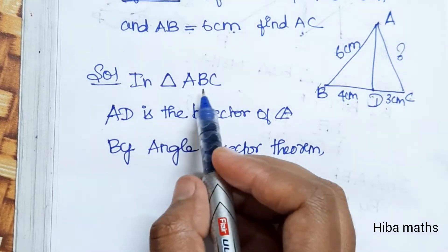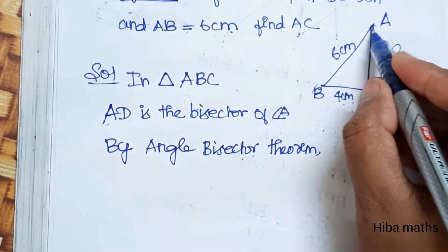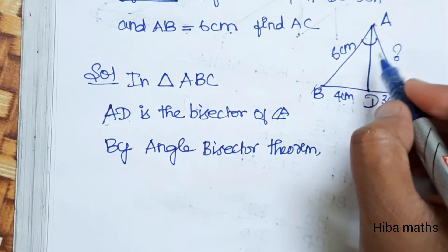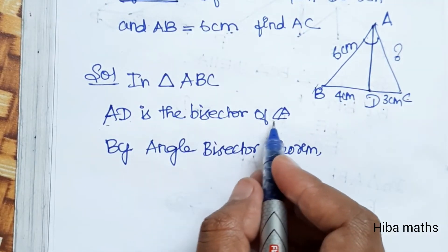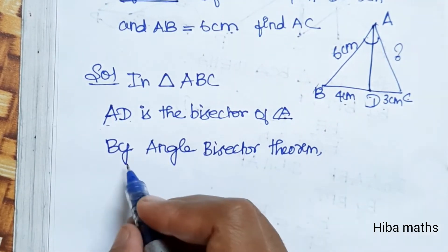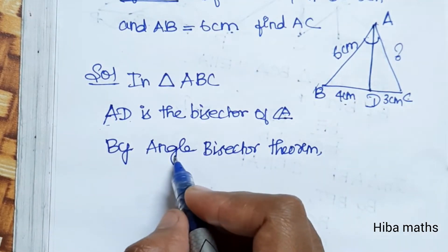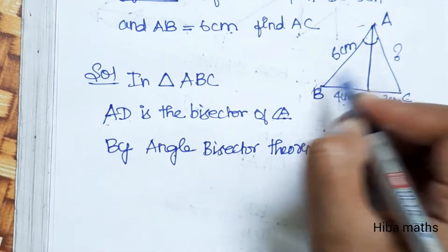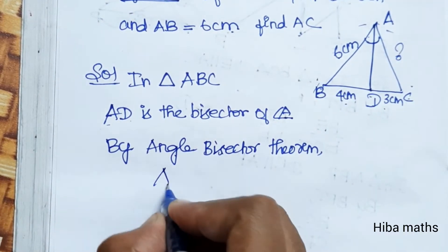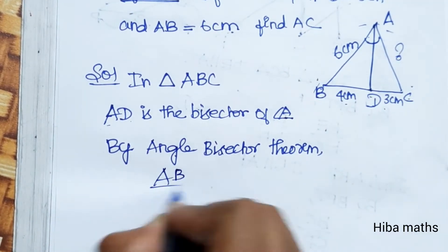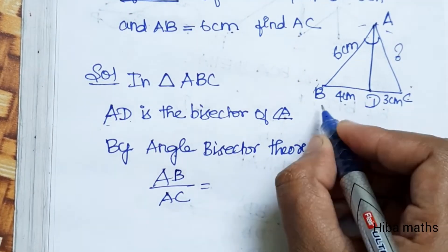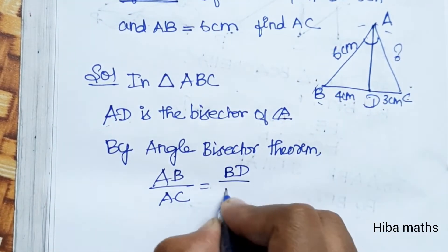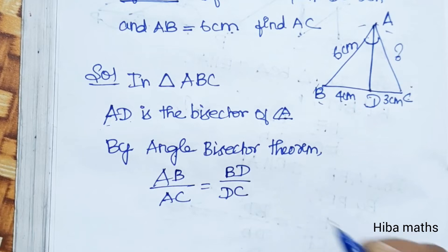In triangle ABC, AD is the angle bisector of angle A. By the angle bisector theorem, the condition is: AB by AC equals BD by DC.